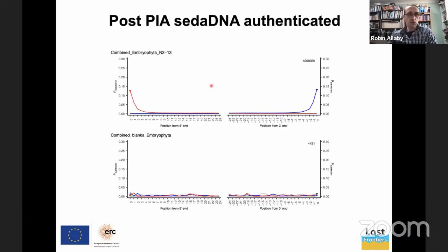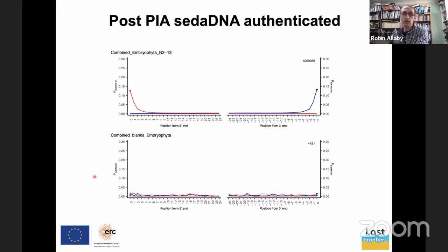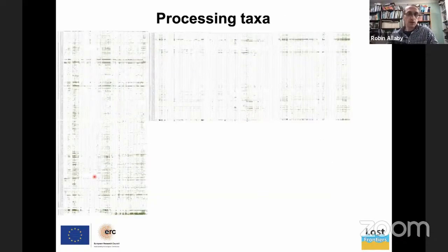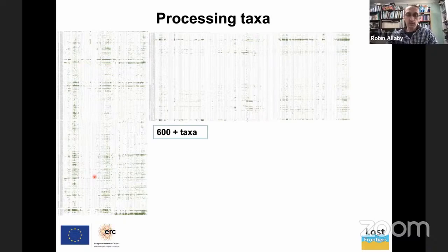We are generally quite happy that our data are genuine ancient DNA — all our PIA-authenticated data is over 4 million reads, and we can see that in our extraction blanks we don't see damaged DNA coming through. The problem from here on is that we've got about 600-plus taxa, which would make quite awful parallel pollen diagrams and diatom diagrams.